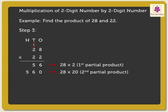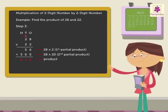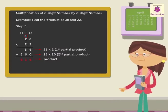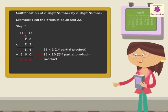Now, add both the partial products obtained, that is 56 plus 560, to get the answer, which is equal to 616. Wow! Isn't it easy to multiply a two-digit number by another two-digit number?